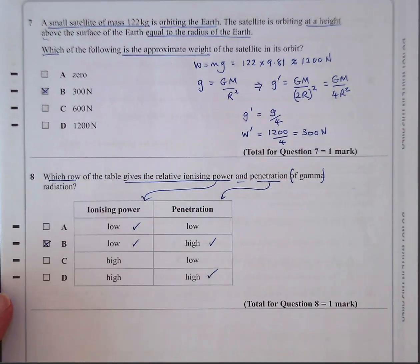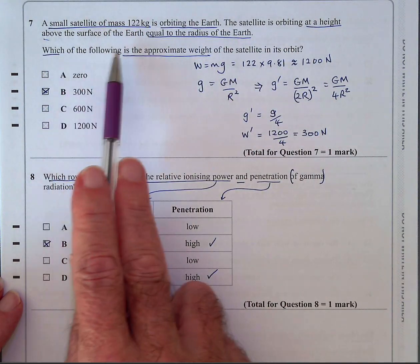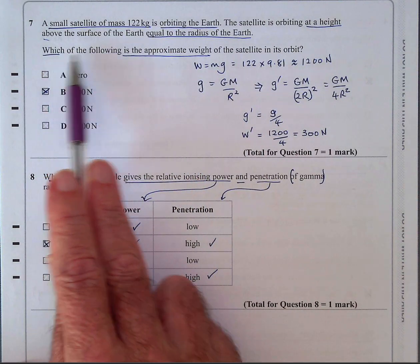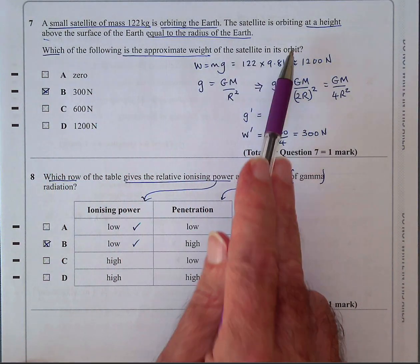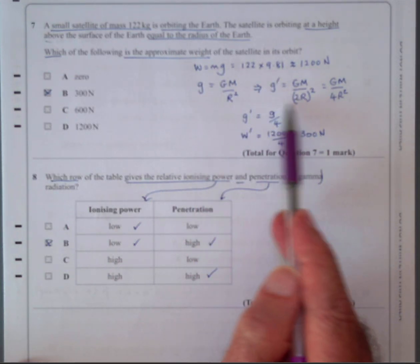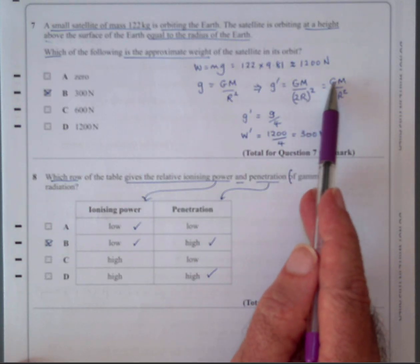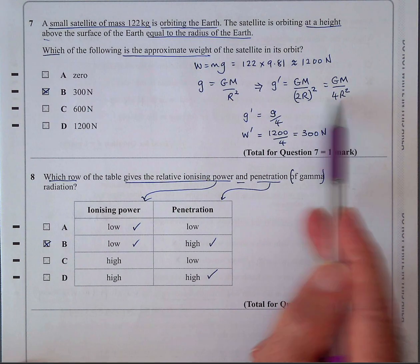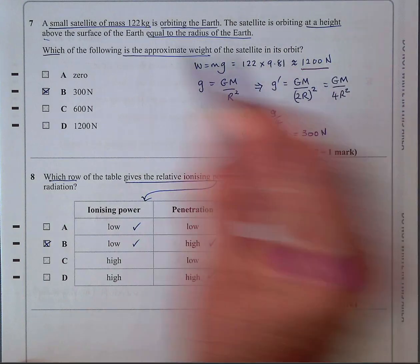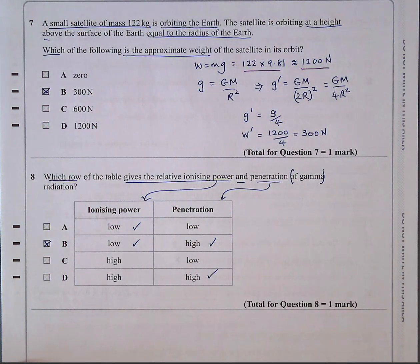Question seven over the page. A small satellite of mass, one, two, two kilograms, is orbiting the Earth. The satellite is orbiting at a height above the surface of the Earth equal to the radius of the Earth. So you've basically got R and 2R, which of the following is the approximate weight of the satellite. So G is GM over R squared and the G dash at 2R will be GM, same mass, over 2R all squared. So this has to be all squared. So basically this, and this one brings in a factor of two squared, so it's four. So it's G over four. And we know initially it would have been 1200 newtons. Approximately, if you multiply that out. So it's going to be a quarter of 1200 newtons, which is 300 newtons.